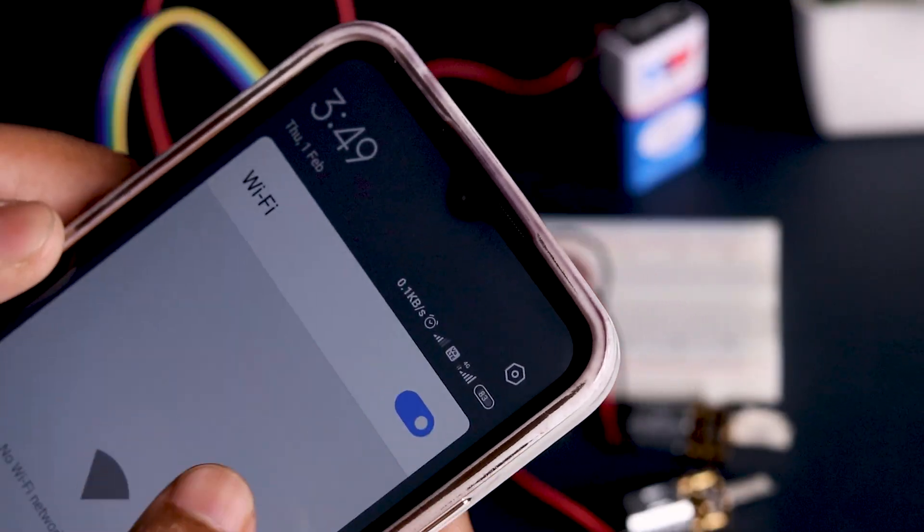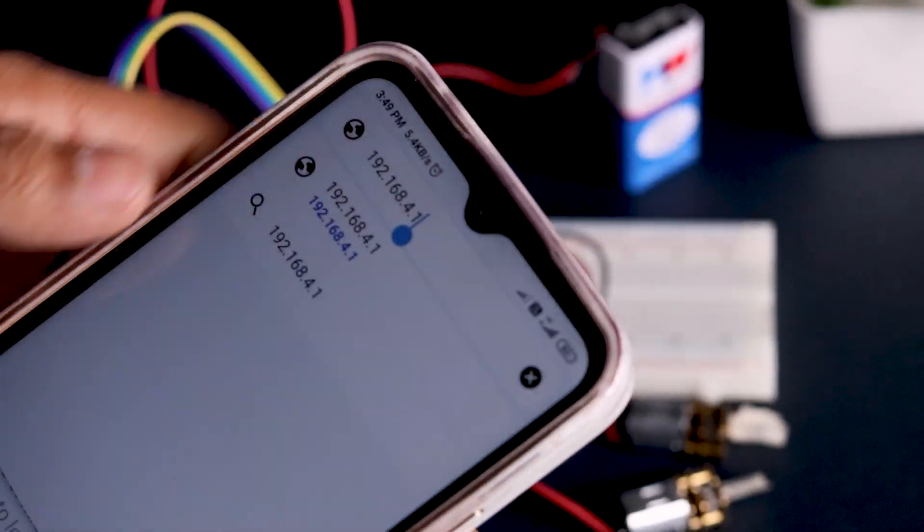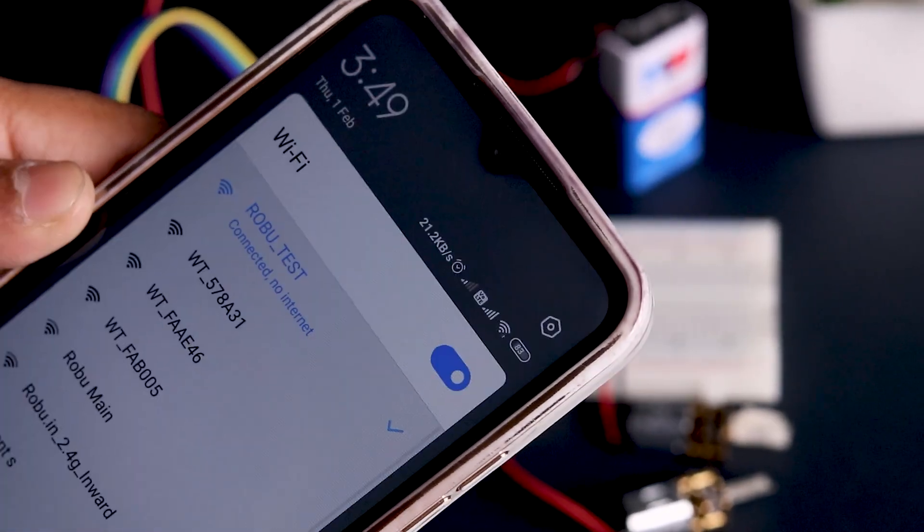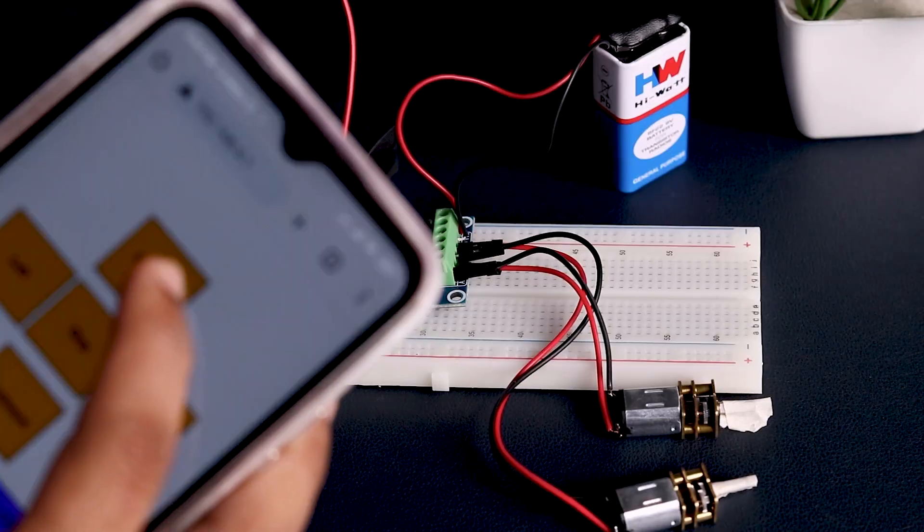Connect your mobile to the board using WiFi and enter the IP in the browser tab. The control dashboard will open. Let's check the control buttons to see if they're working.